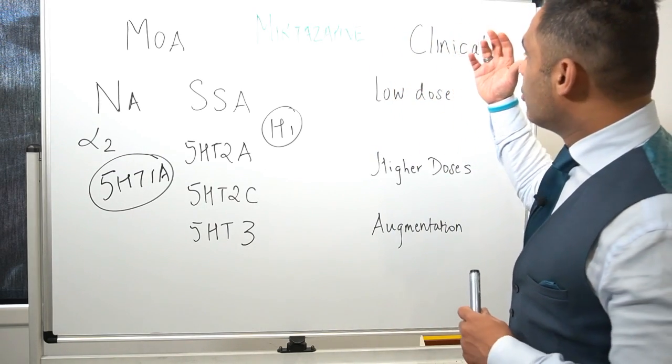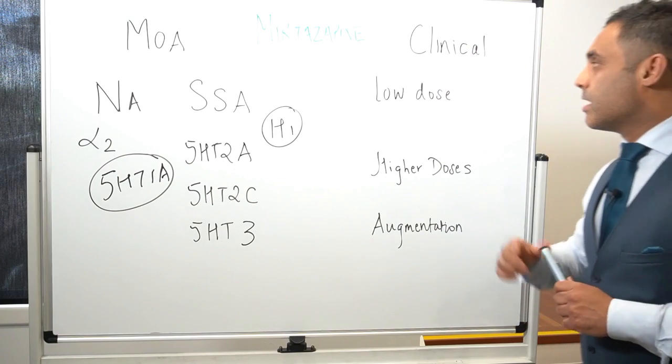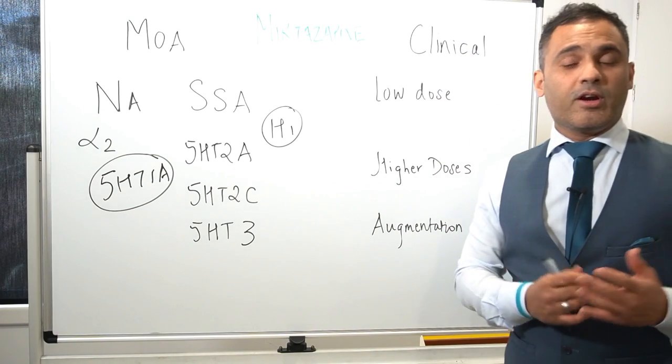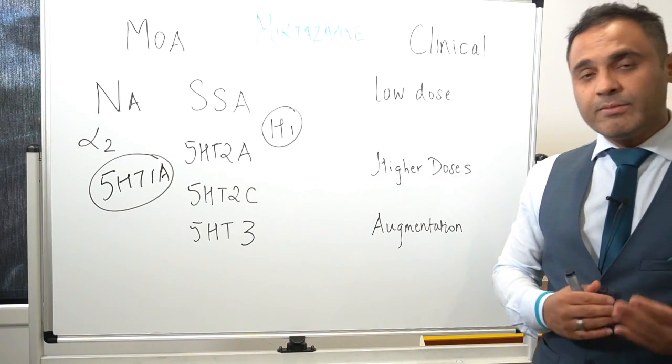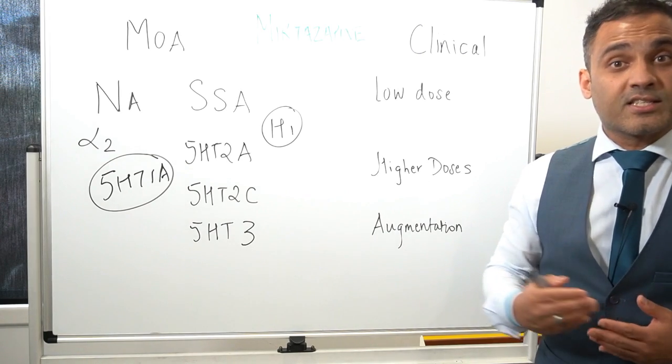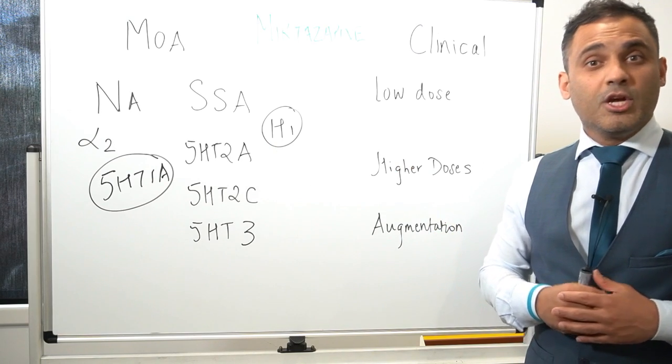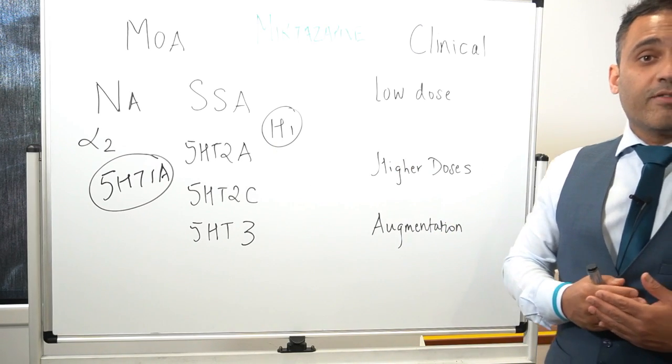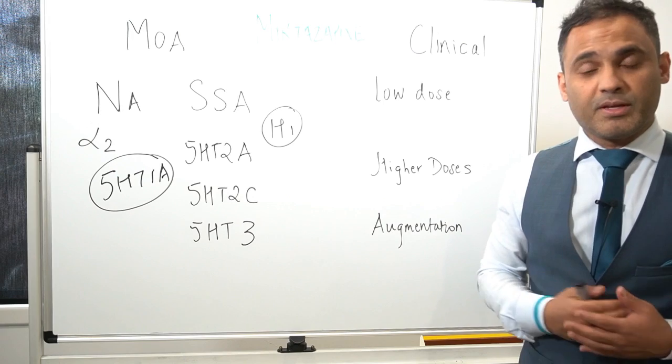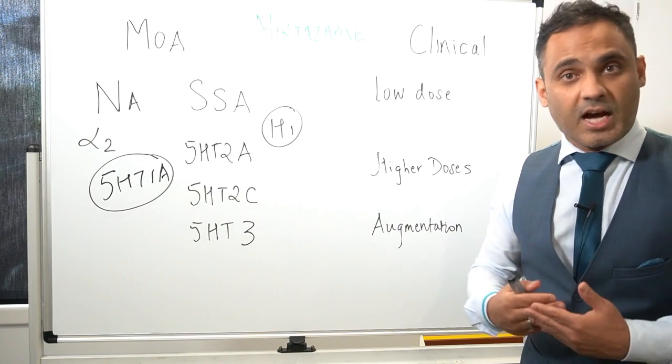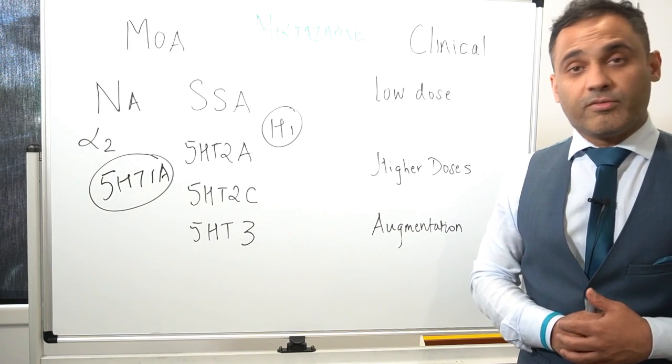So when we come to clinical practice, low-dose mirtazapine can be very useful. For example, 7.5 to 50 milligrams to provide sedation and anti-anxiety properties because of 5-HT2A antagonism in the limbic system. So it can be quite useful in a patient that's not sleeping or has anxiety.